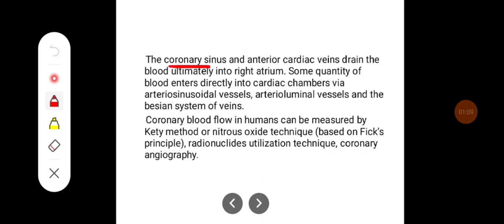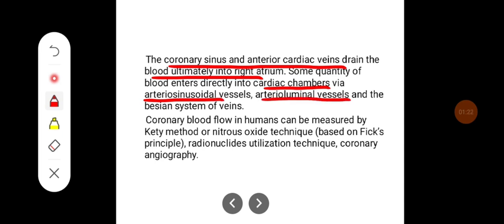The coronary sinus and anterior cardiac veins drain the blood ultimately into the right atrium. Some quantity of blood enters directly into the cardiac chambers via arteriosinusoidal vessels, arterioluminal vessels, and the Thebesian system of veins.